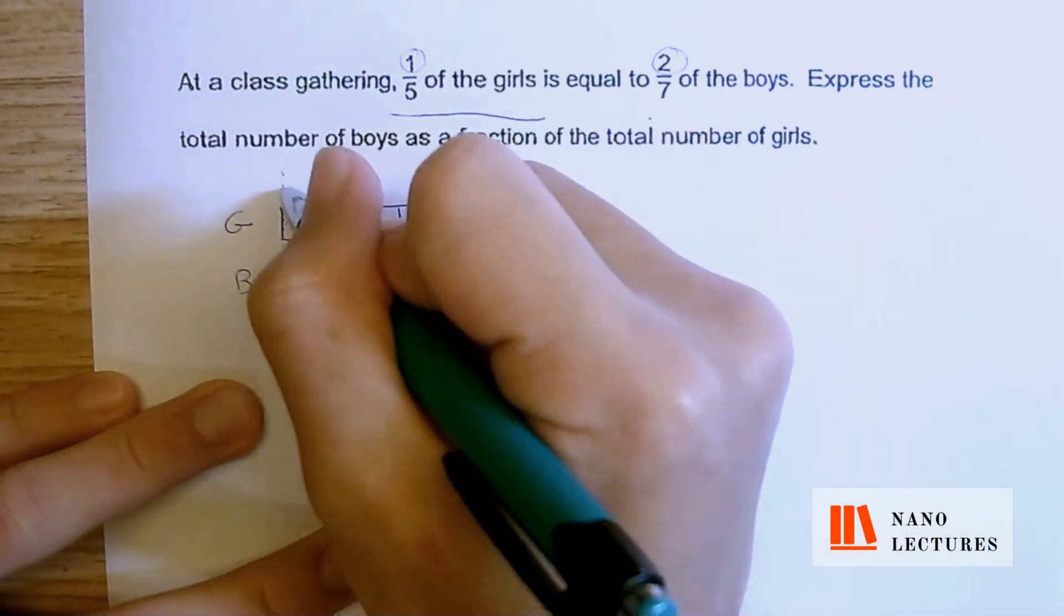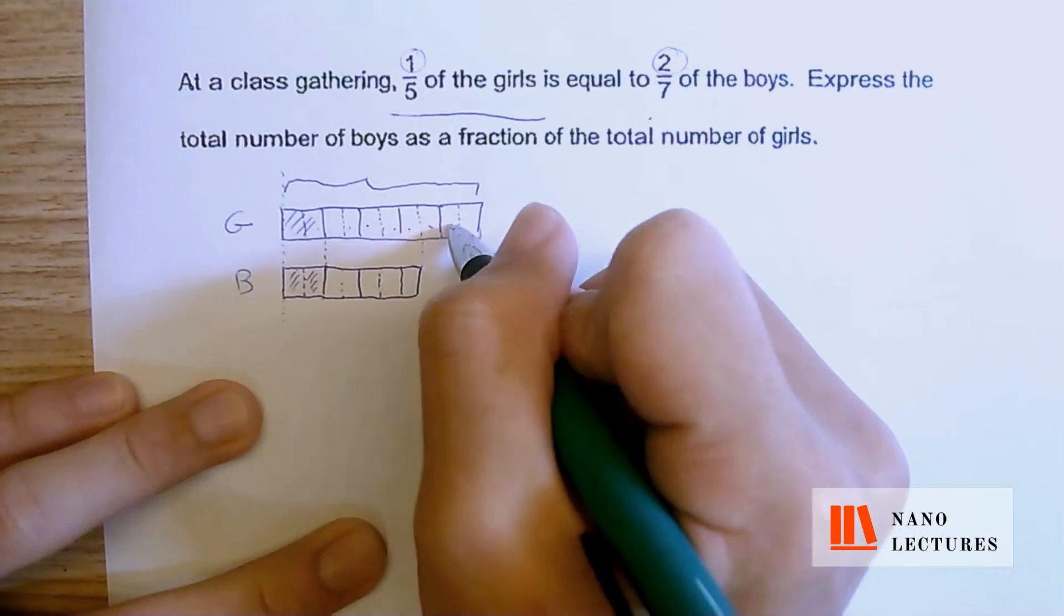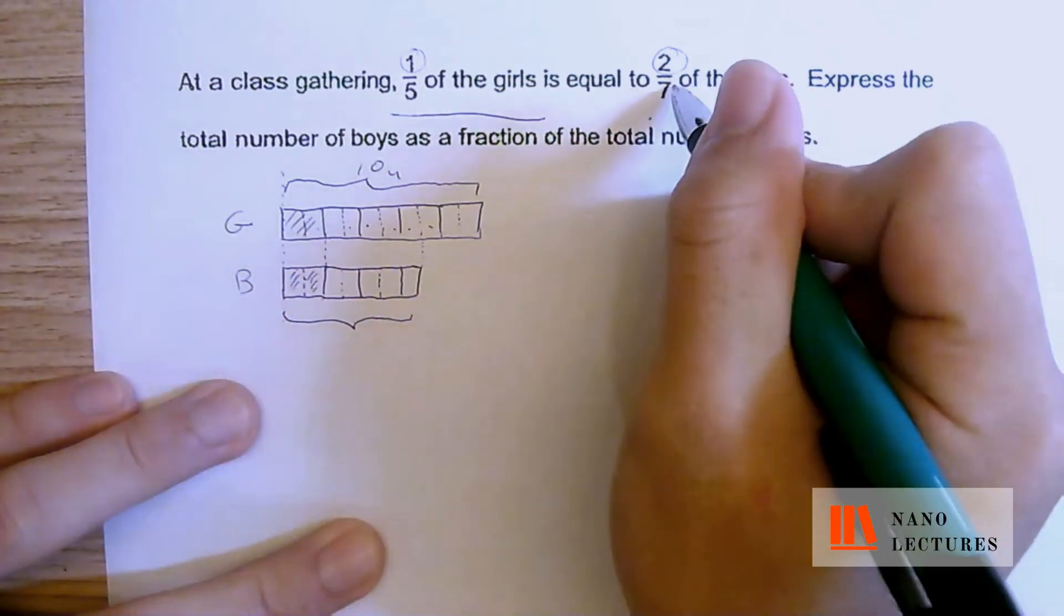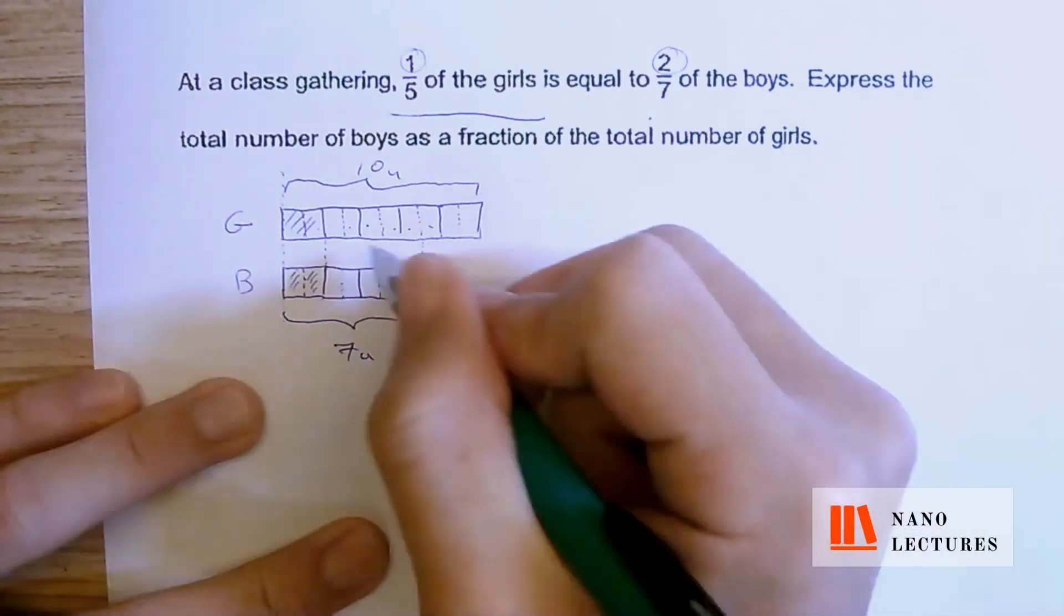Now, what does this tell you? It tells you that for girls, there are one, two, three, four, five, six, seven, eight, nine, ten units. And for the boys, we drew seven. So this one is seven units. So this is the complete model.